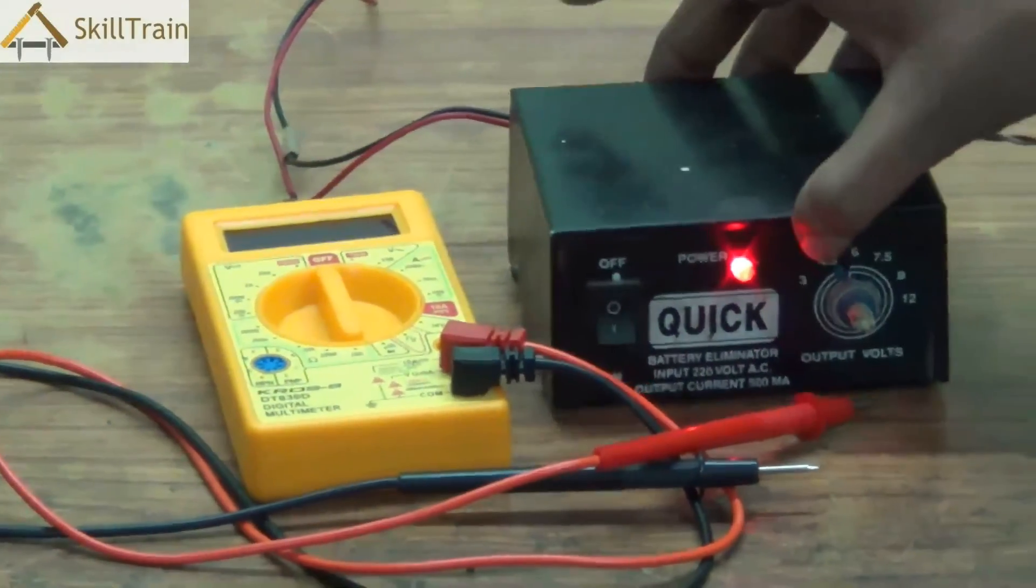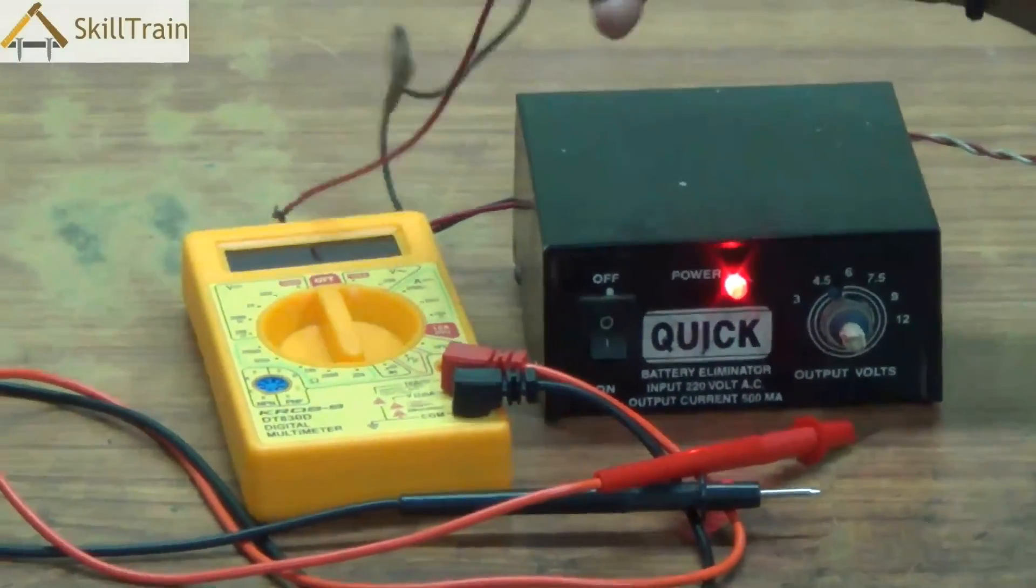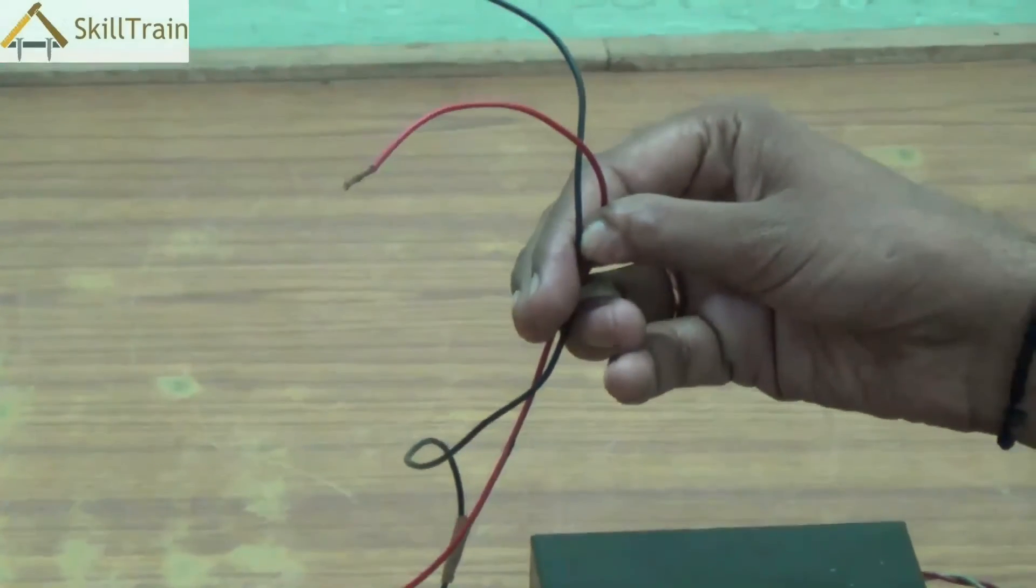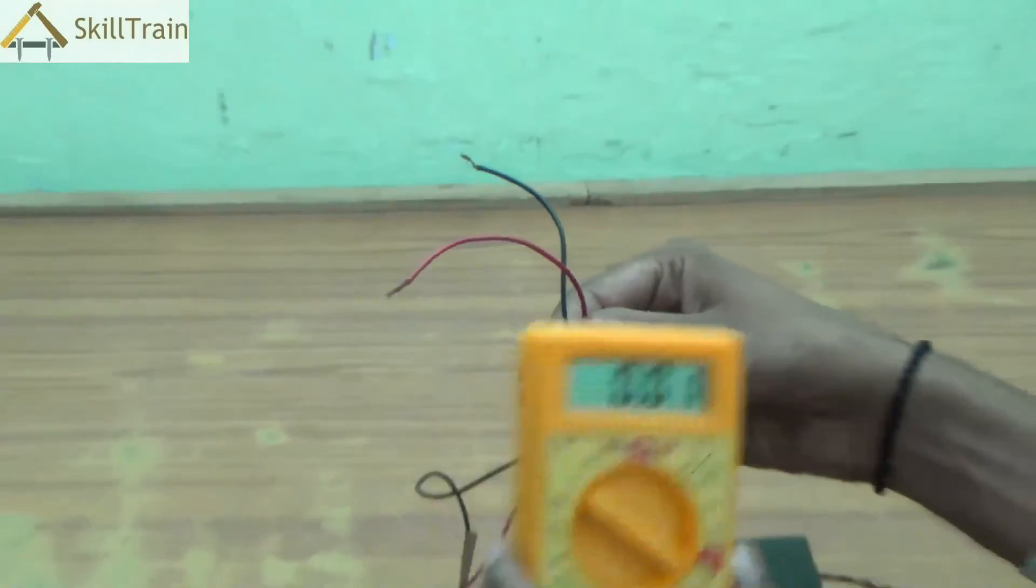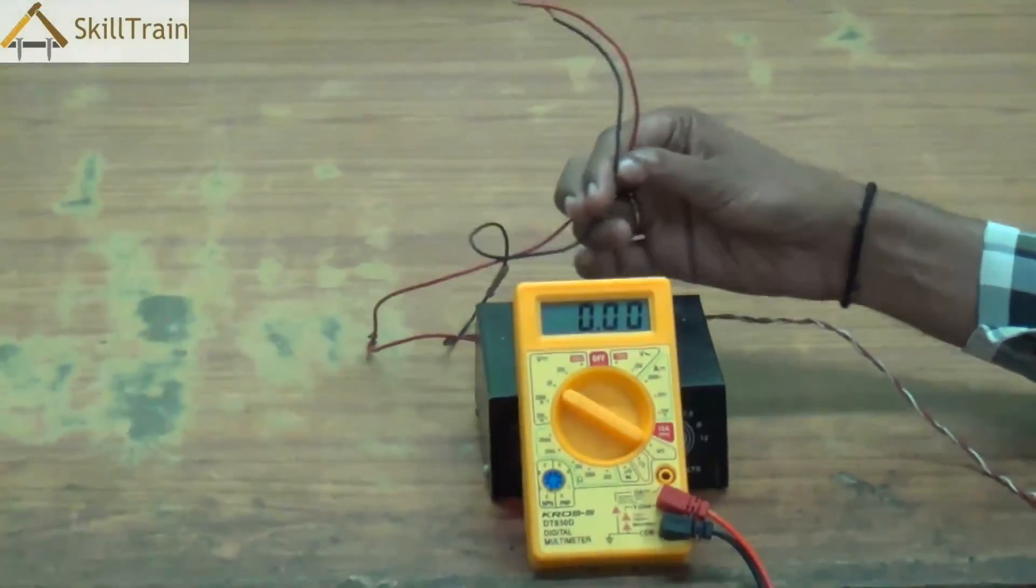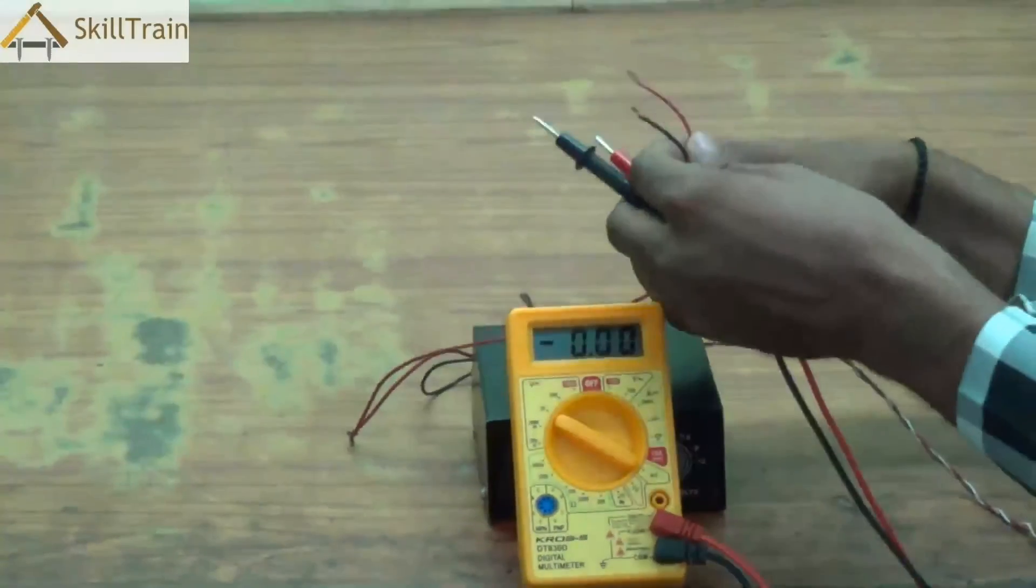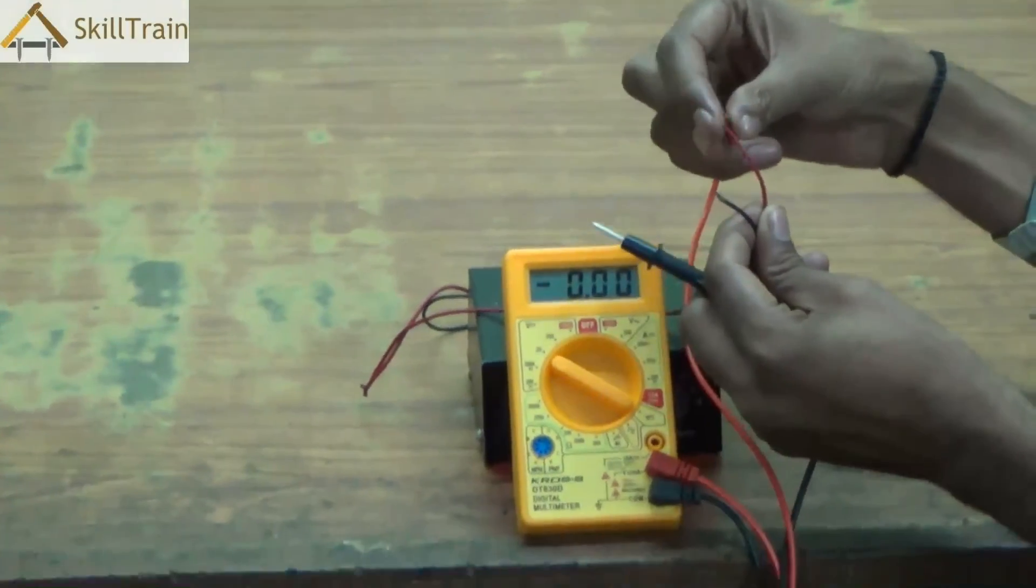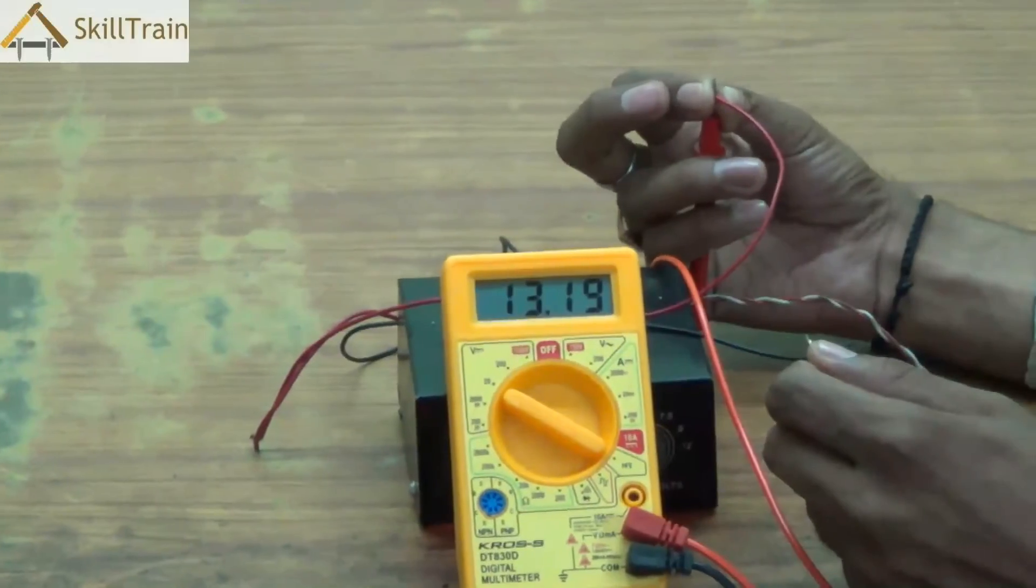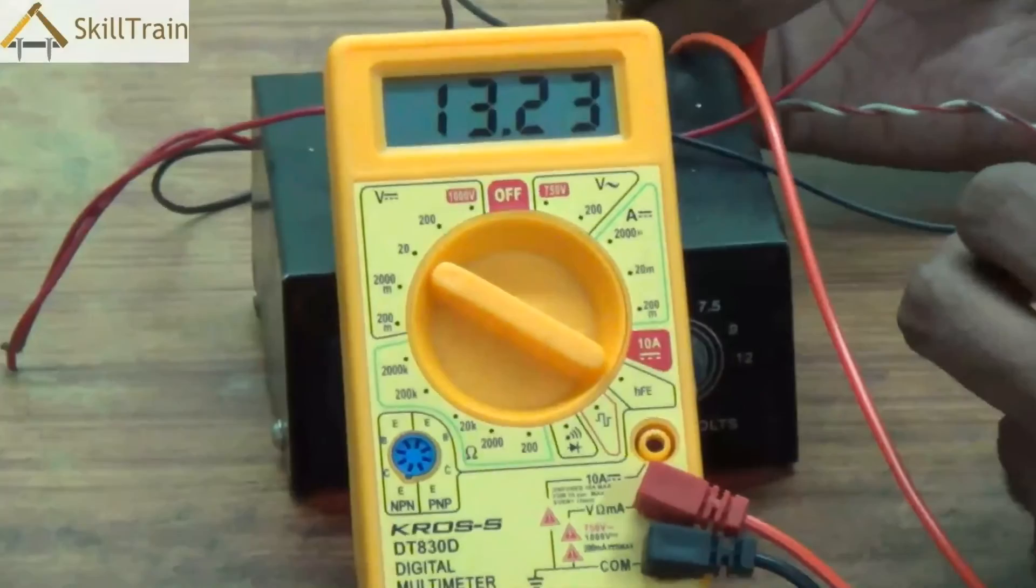We switched on the battery booster. This is a device that's used to boost mobile phone batteries. We're going to connect the output wires of this to the probes. We're going to be testing the voltage of the output. Now we connect the two output wires of the booster to the two probes of the multimeter. Make sure that you connect it to the right end. So the black in the black, red in the red. And you can see this is around 13.22 volts.